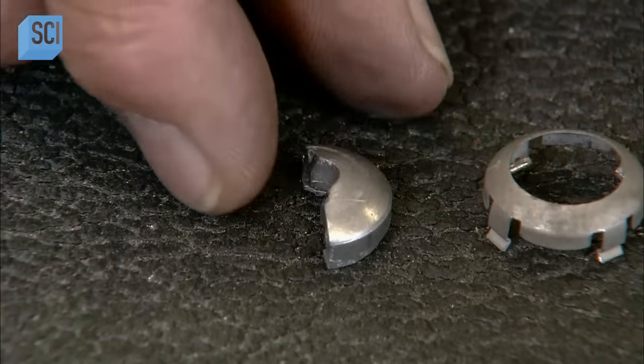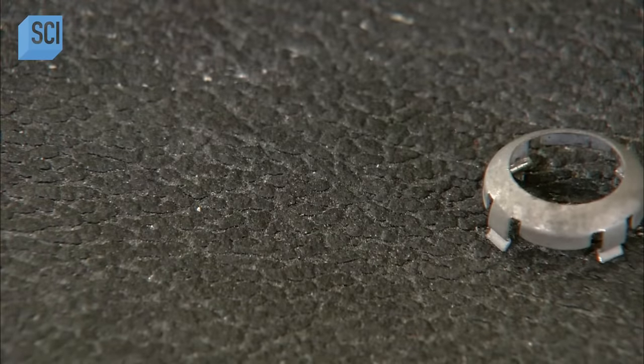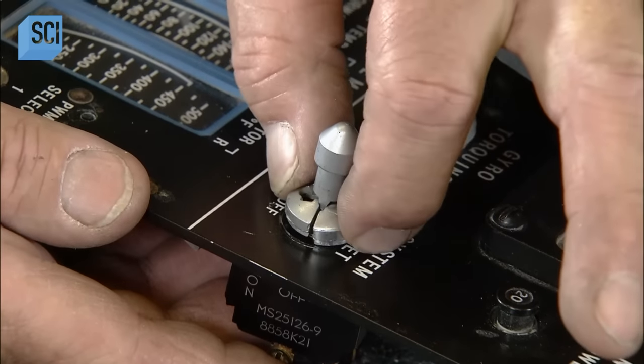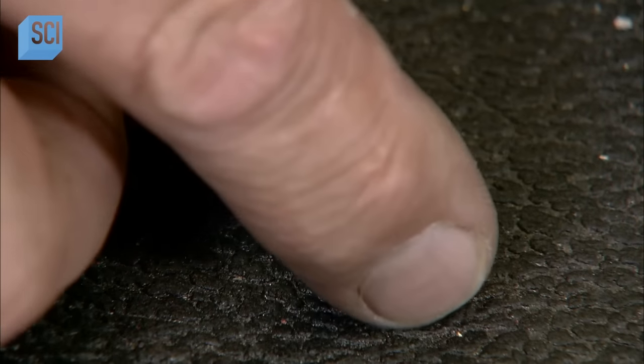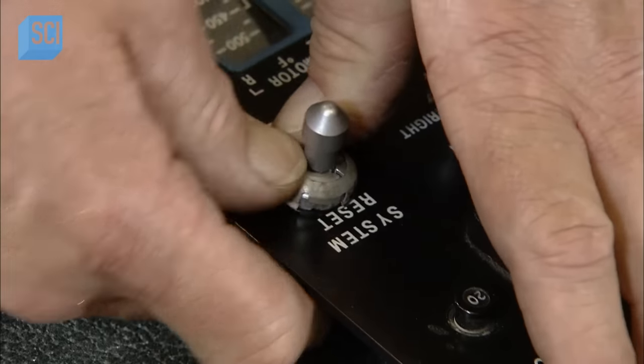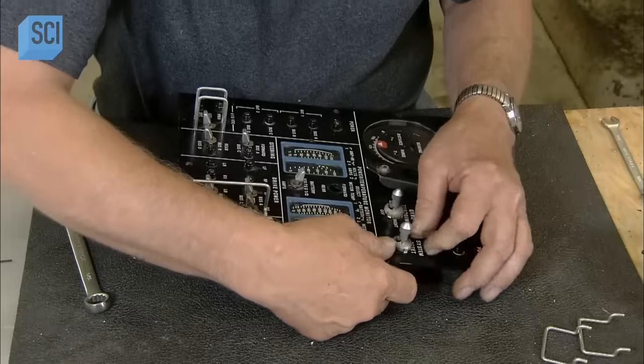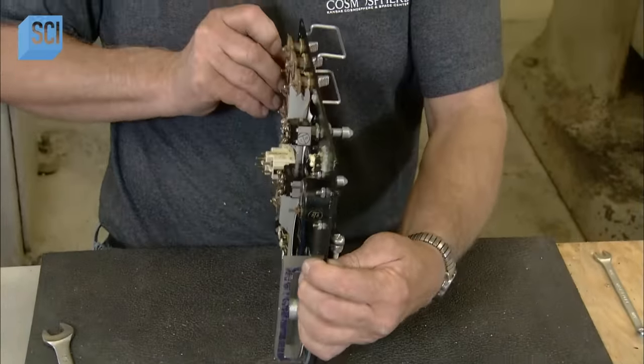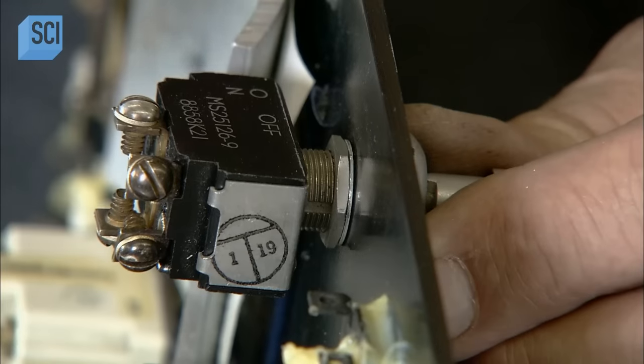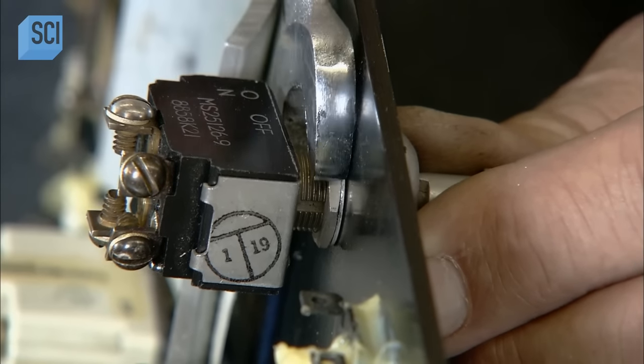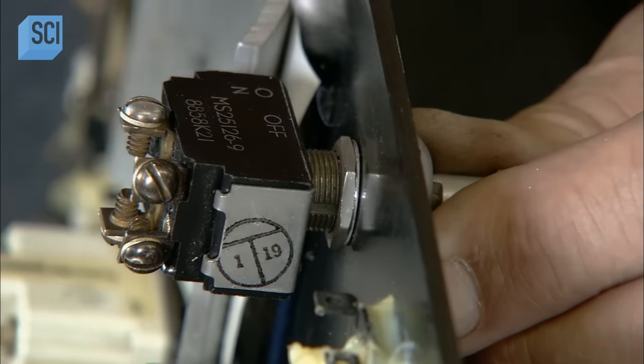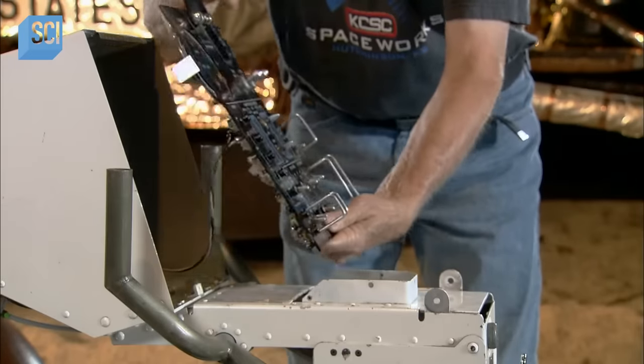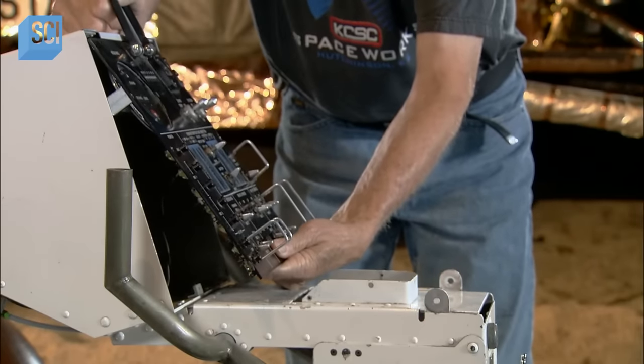He closes a two-piece collar around the bottom of the switch and locks it in place with a top cap. He then flips the panel around and tightens the nut on the back part of the switch. With the system reset switch now snug to the board, the instrument panel is complete.